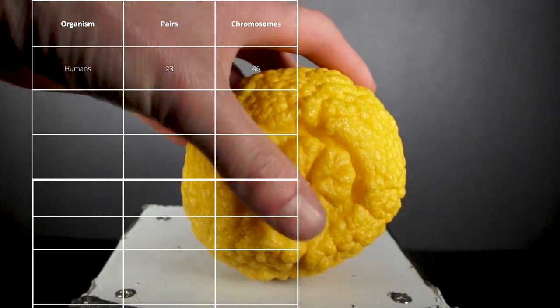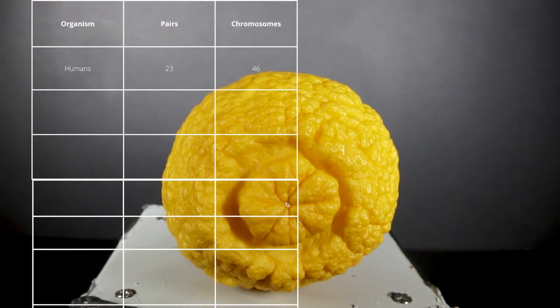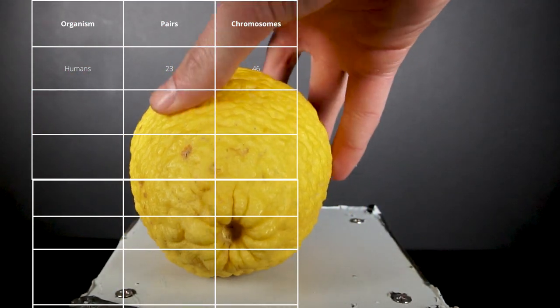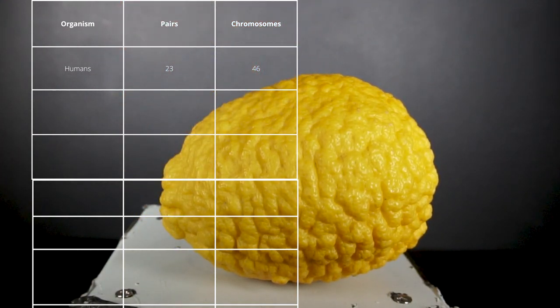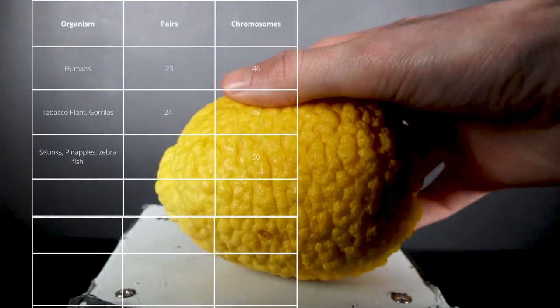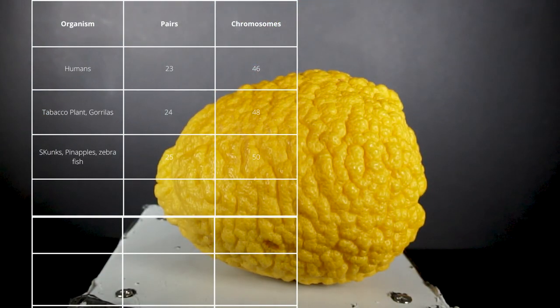Humans have an estimated 20,000 to 25,000 genes. Though, the number of chromosomes has nothing to do with how complex the specific organism is, and there are a lot of random organisms with more chromosomes than humans. These organisms include things like the tobacco plant, which has 24 pairs, skunks, pineapples, and zebrafish, which all have 25 pairs.